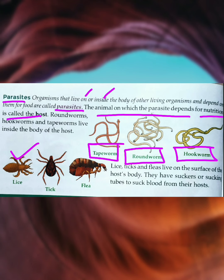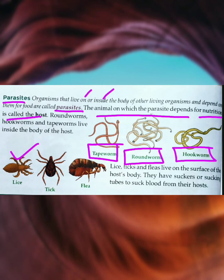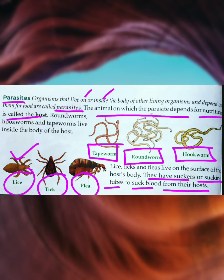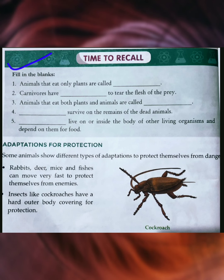A familiar example is lice. Lice are found on the head, between the hairs. When a person does not clean their head properly, lice lay eggs, their numbers increase, and they suck blood — which is very harmful for health. Parasites that live on the surface of the host body include lice, tick, and flea. They have suckers or sucking tubes to suck blood from their host.